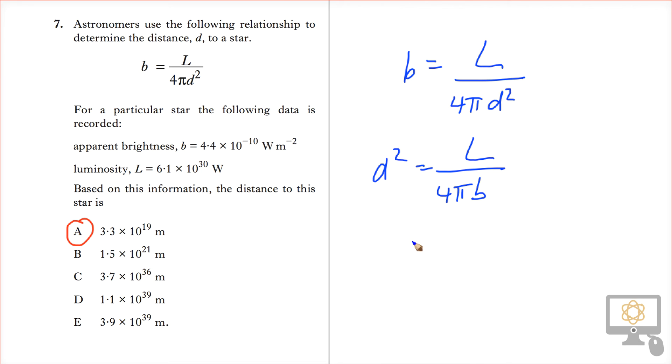So if we plug in the numbers, this should hopefully give us the correct answer. 6.1 × 10³⁰ divided by 4 times π times the apparent brightness, 4.4 × 10⁻¹⁰.